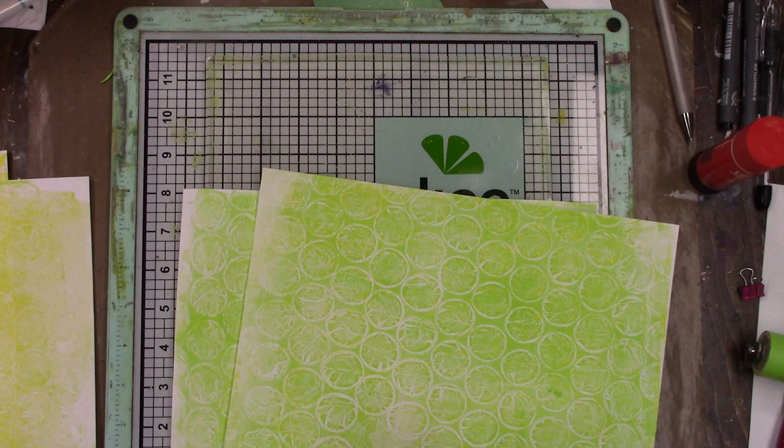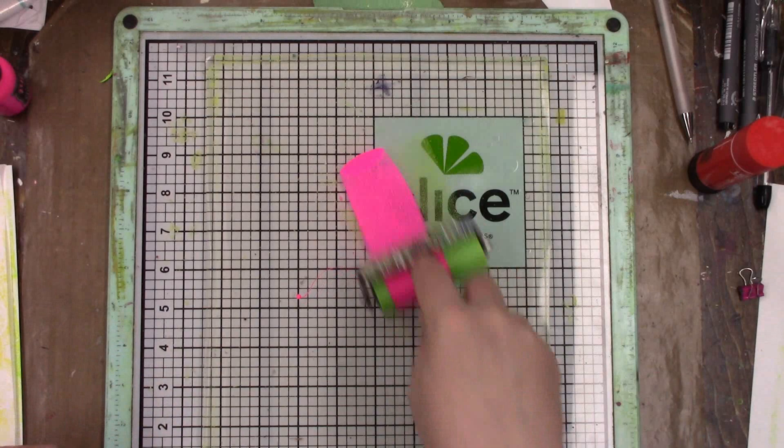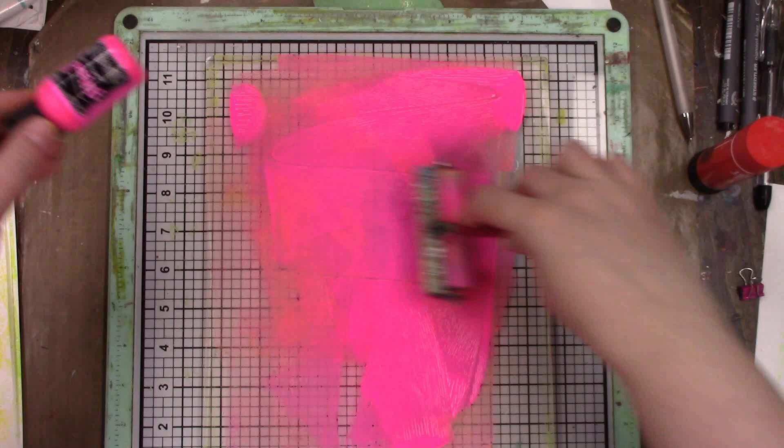One thing I love about the nine by eleven, it fully covers your regular sheet of paper which is eight and a half by eleven. Here I'm going in with some more dilutions paint in the color tropical sangria.